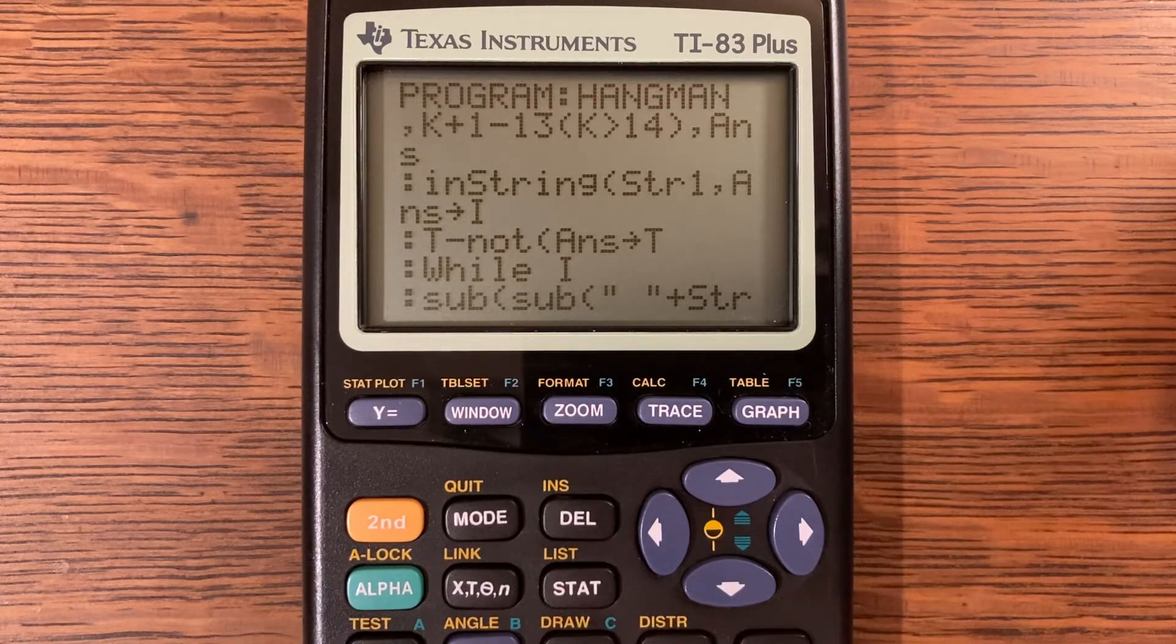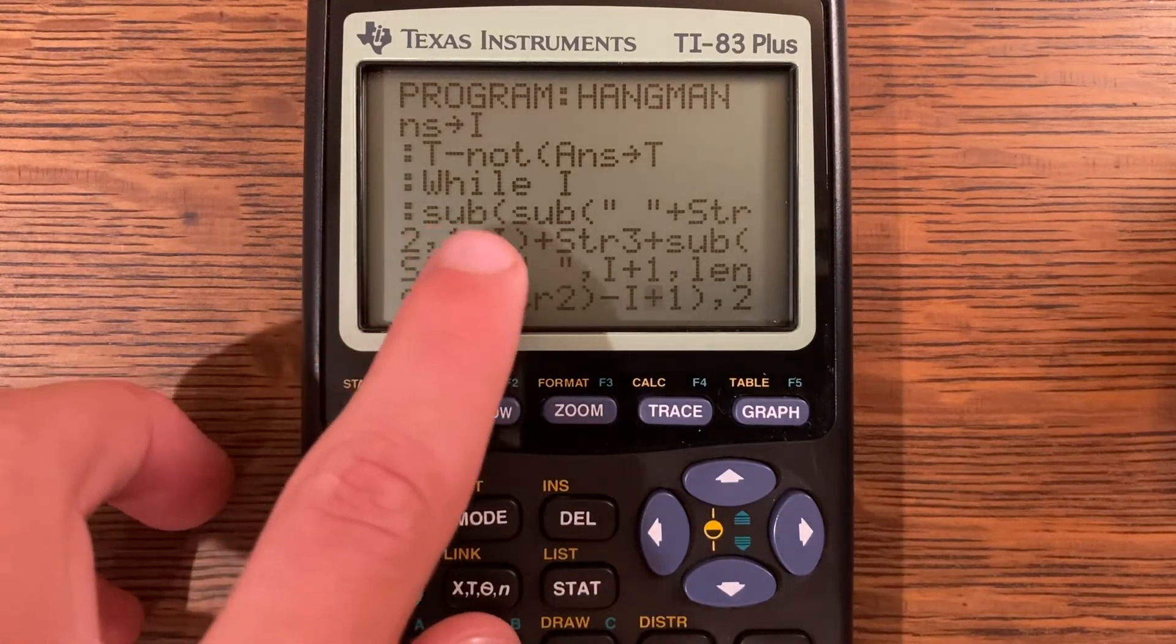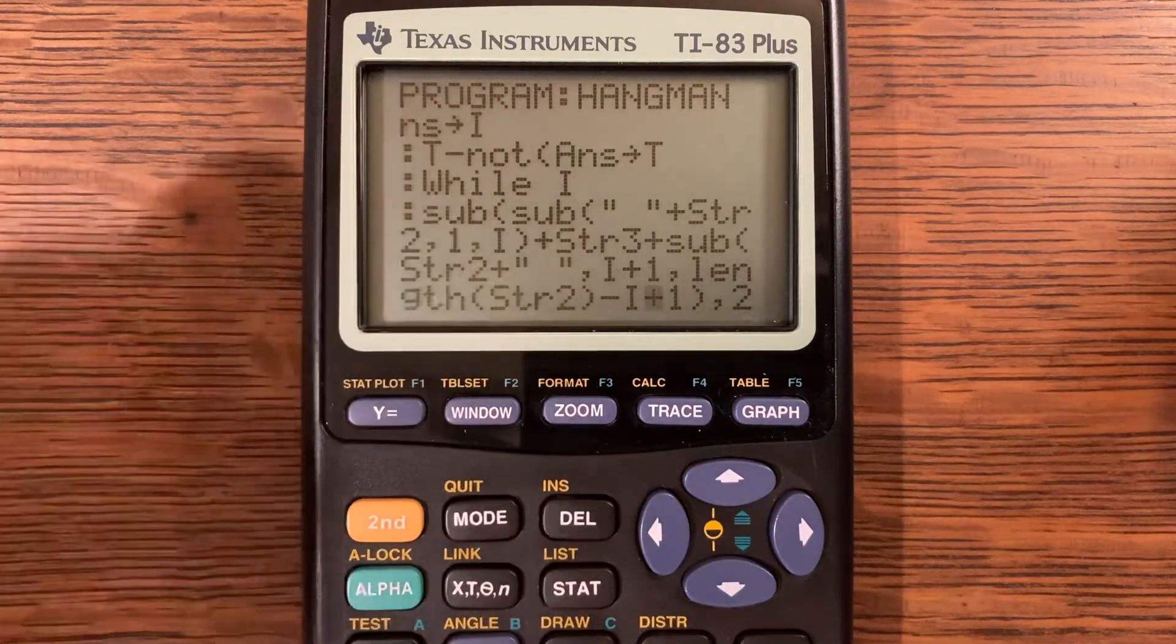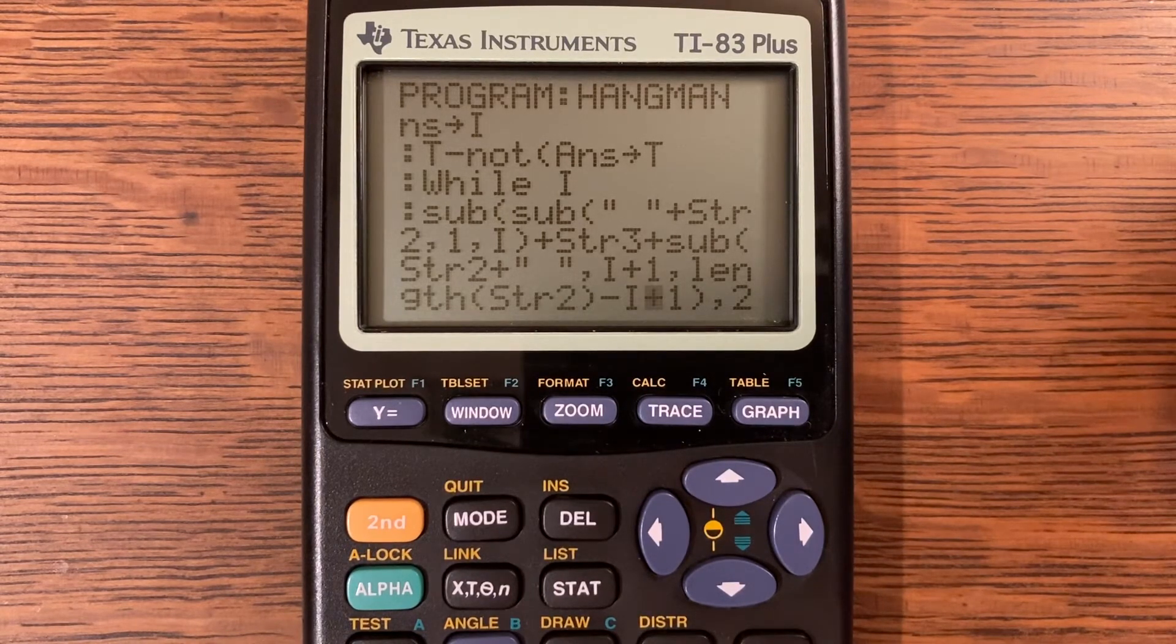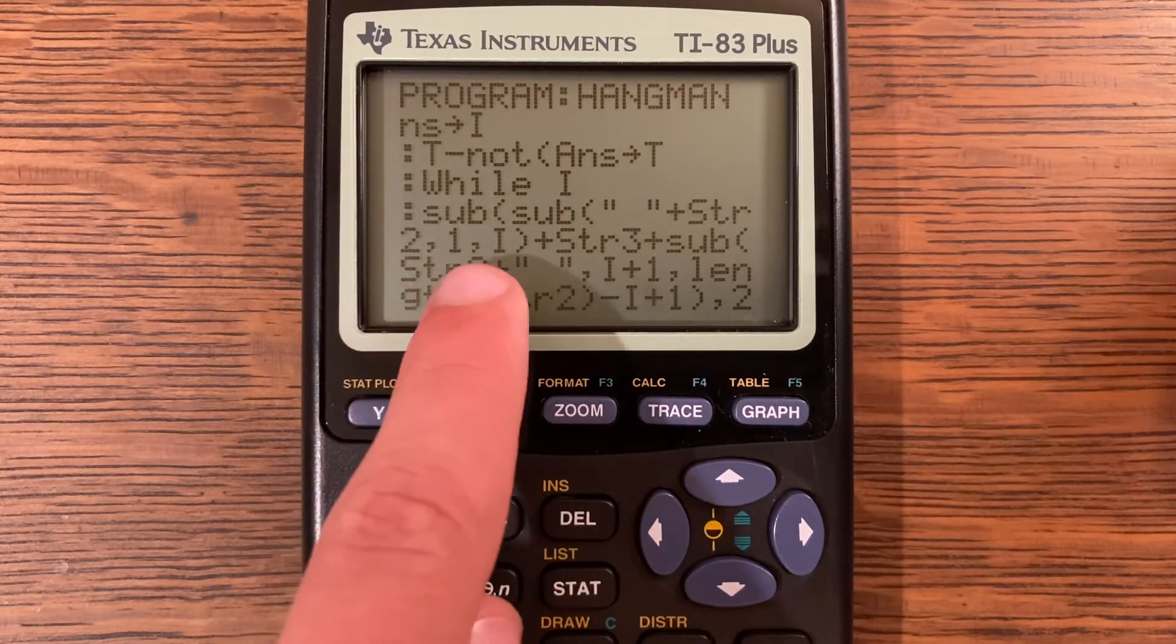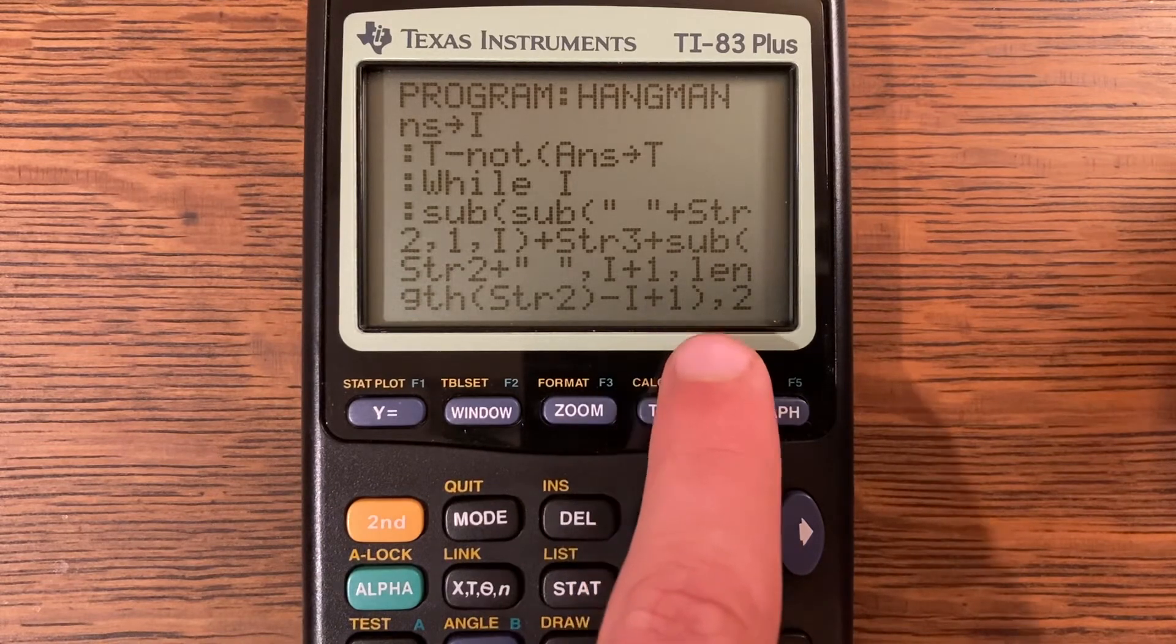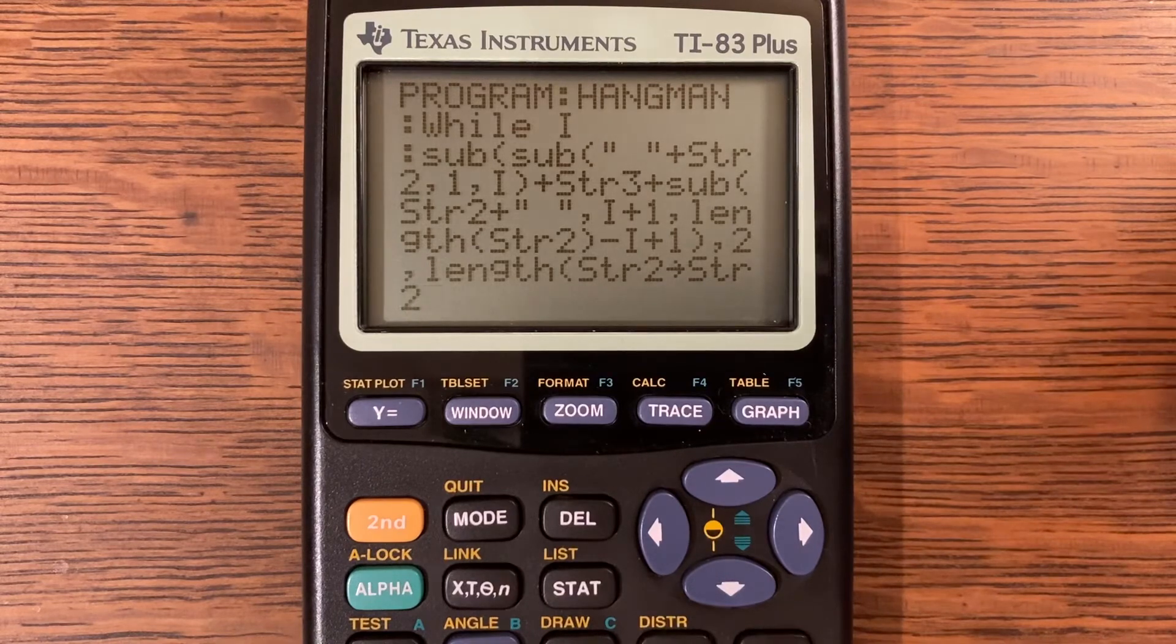While i sub sub, and that is an interesting thing that they do here, they have a sub in a sub, which I have actually never seen before in a program. It's a really interesting occurrence here and it's very advanced string manipulation in this program. Again, down in the description there is a link to the actual program on TI Basic Developer which you can look at for yourself too. Sub sub comma or sorry quote space quote plus string two comma i comma or sorry comma one comma i plus string three comma sub string two plus and then a quote space space quote comma i plus one comma length of string two minus i plus one and then a parenthesis there comma two comma length of string two store into string two. You want to make sure you have all your parentheses and commas right there because if you don't the program may not work correctly. Just make sure that you copy the lines exactly how they are written.